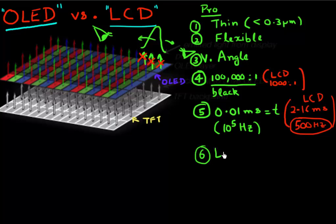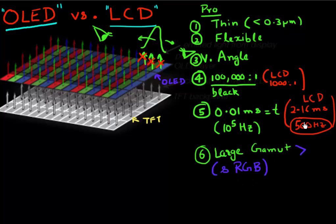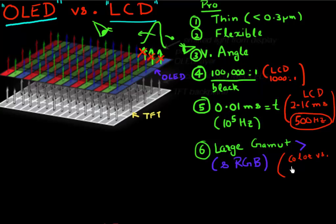Another thing you'll hear very often is that OLED-based displays have a much larger color gamut. The color gamut from these displays is often much larger than the standard sRGB gamut, and OLED-based displays many times even exceed that. On the LCD side, color always comes at a compromise with brightness because you need stronger color filters — there's always a color versus brightness trade-off. Since OLED-based displays generate colors directly instead of using a color filter, you tend to get a larger color gamut.